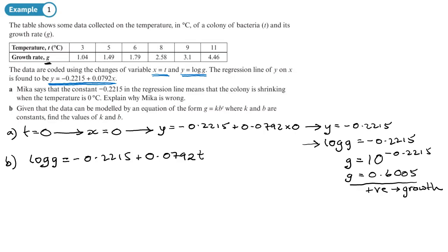This is just about making g the subject. So using the rules of powers and logs, g equals 10 to the power of all of this. The rules of powers say that that can be split up, so it's that times by 10 to the power of 0.0792t.